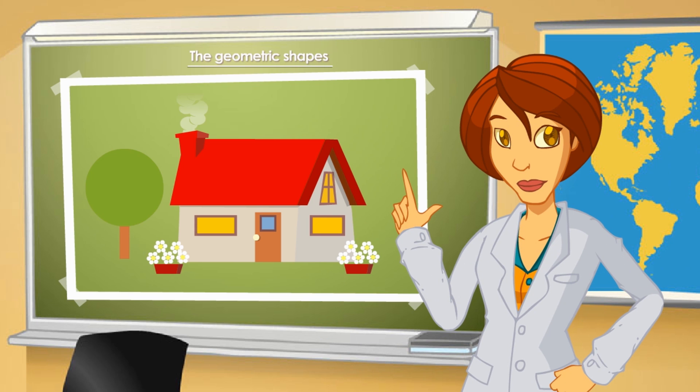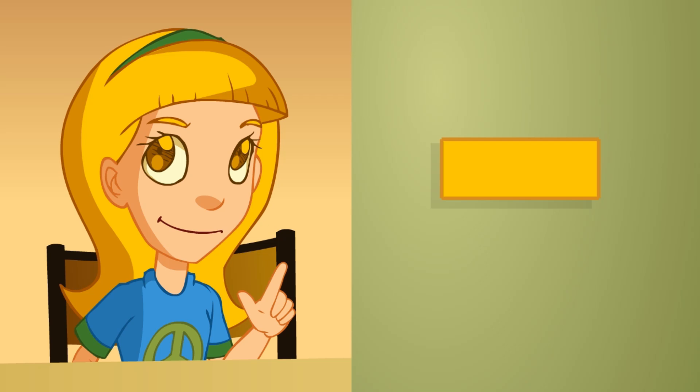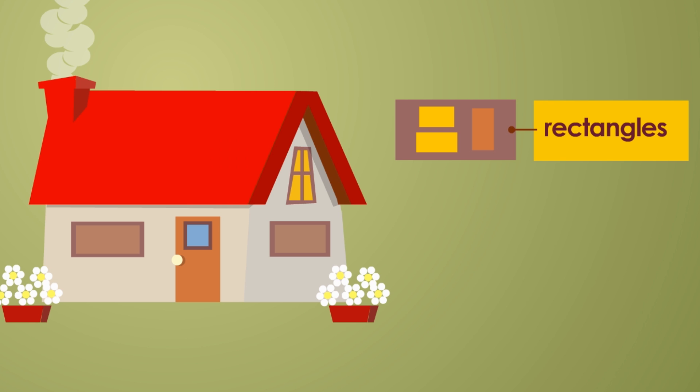Please look at this house carefully. What shapes have been used to draw it? They're rectangles. The door is also a rectangle. Now, what shape has been used to draw the doorknob? A circle. Perfect.